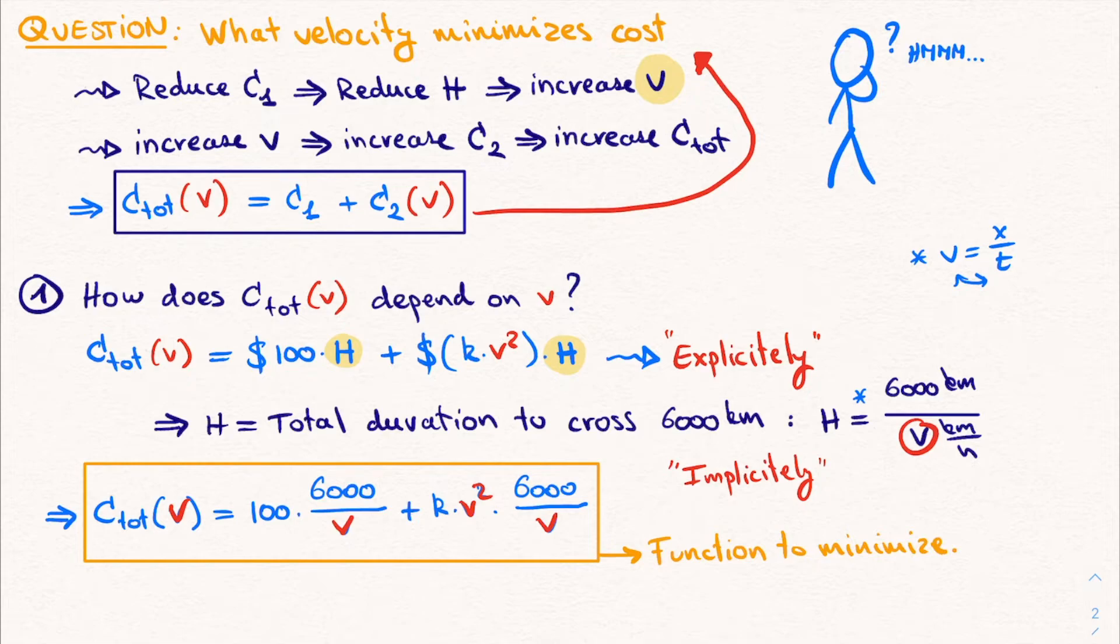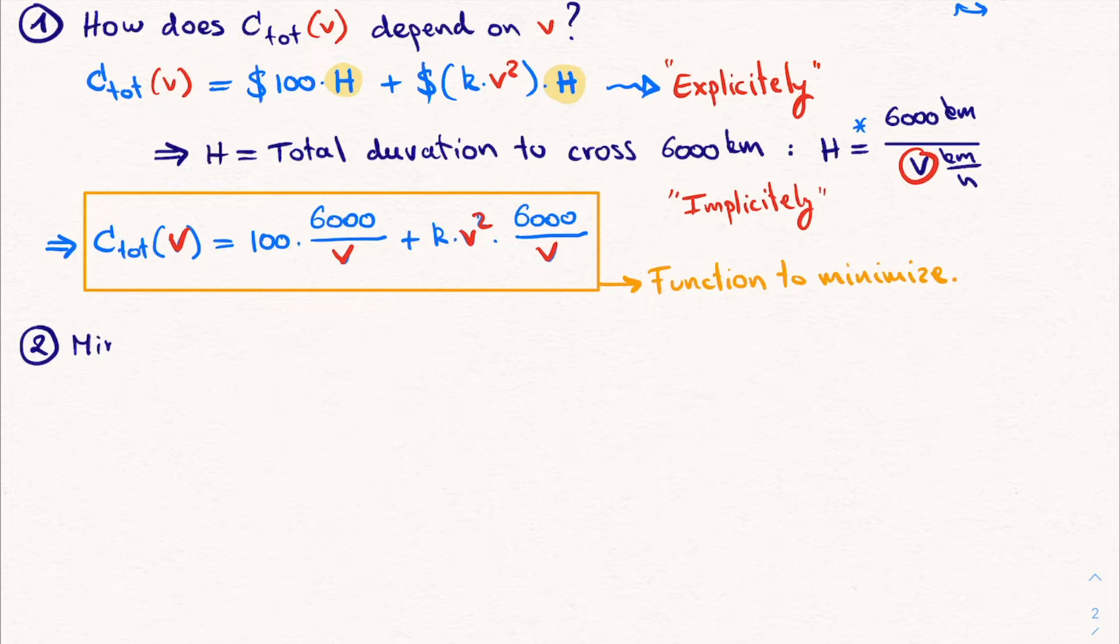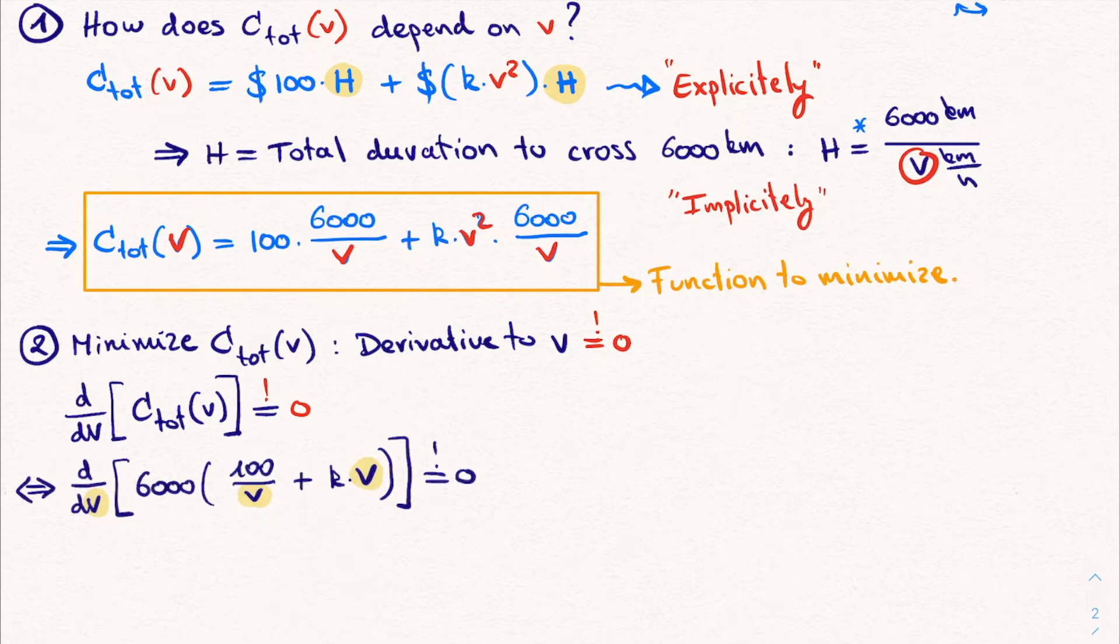And this brings us to the second and final step, where we actually want to minimize this function. Now we know a mathematical tool to do so is to derive this function to its variable, in this case V, and put it equal to 0. And the resulting velocity will be the velocity that we are looking for. So mathematically we write the derivative to the velocity V of this total cost function. And this has to be equal to 0. Now of course, since we have the explicit expression for this function, we get a very straightforward derivative to take. Bringing this 6000 outside of the derivative, because it is a constant number, we find that for the first term, we get minus 100 divided by V squared, and for the second term we simply find K, because we had K times V. And this has to be equal to 0.